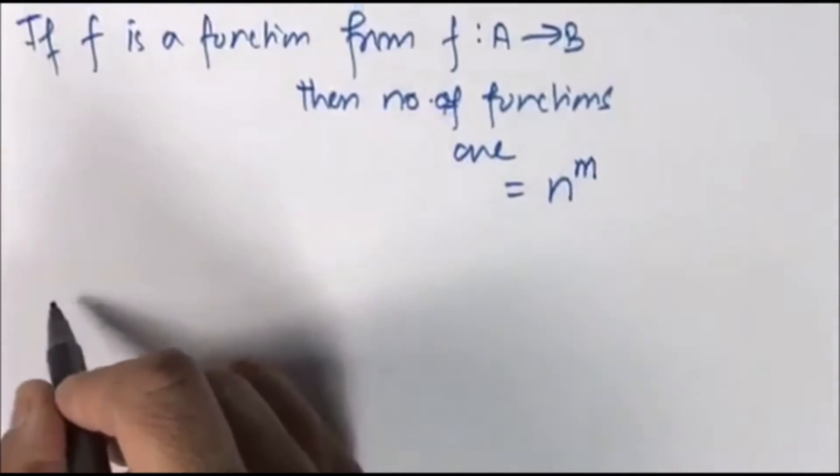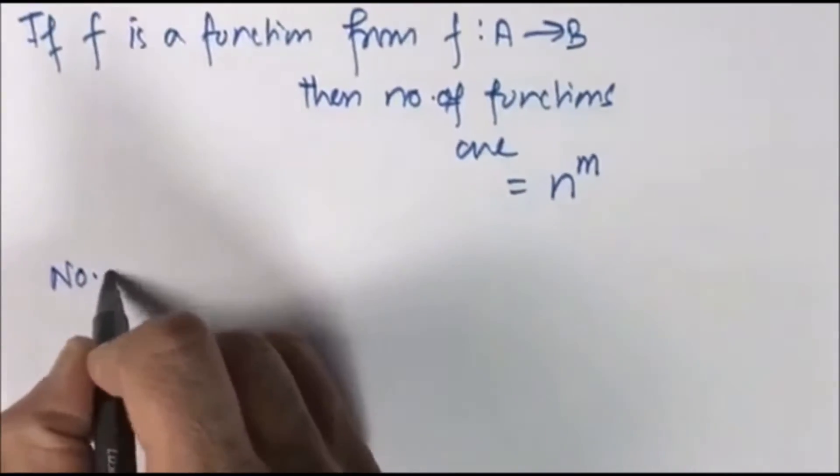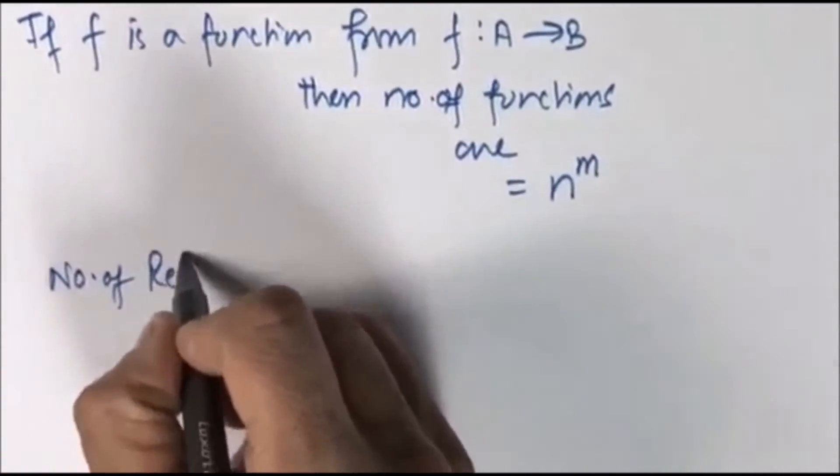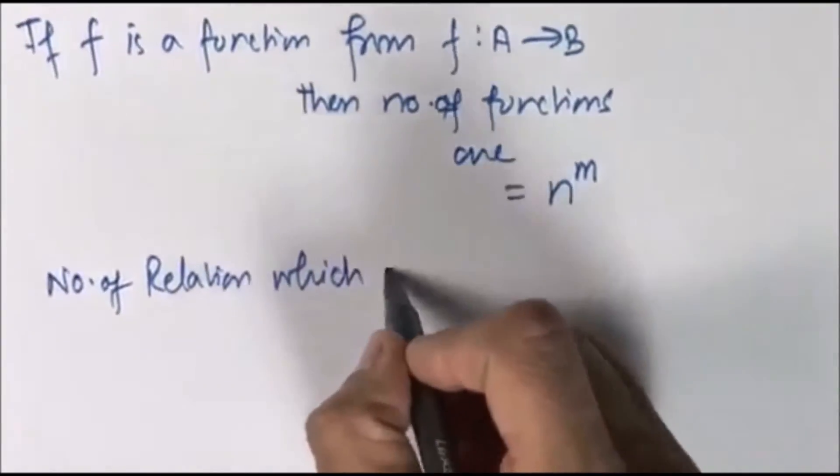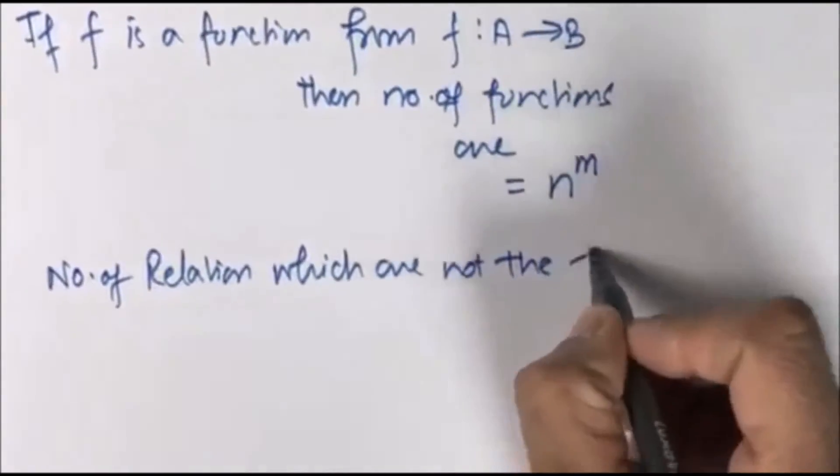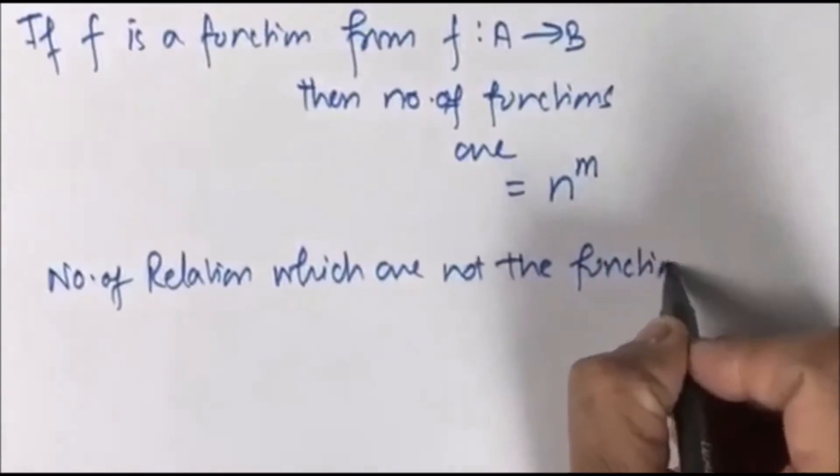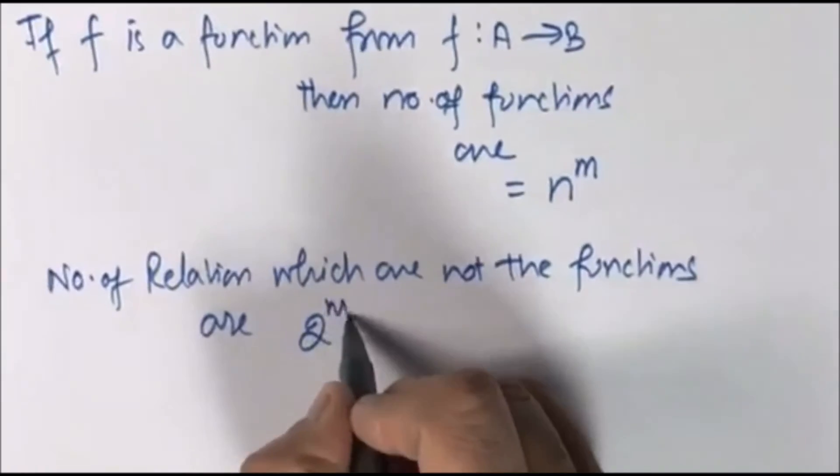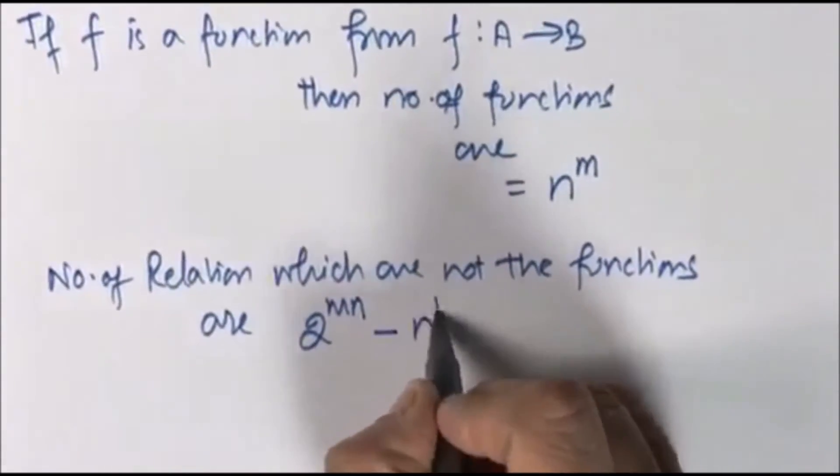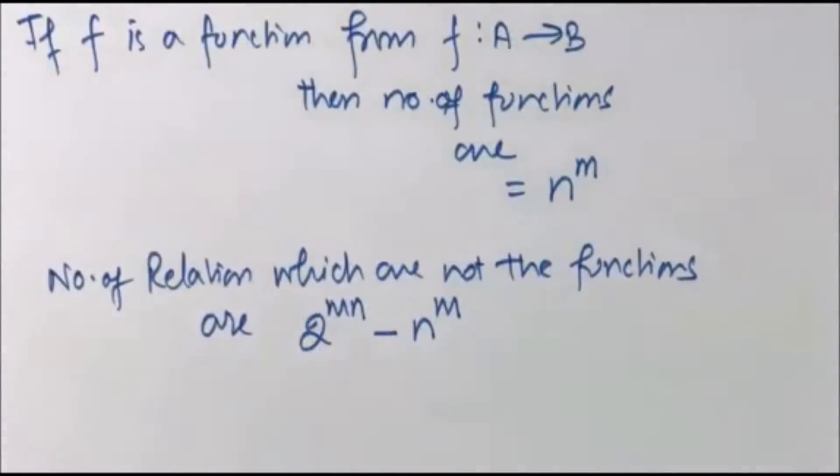So the number of relations which are not the functions are 2 to the power MN minus N to the power M. And this was for your quick revision.